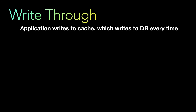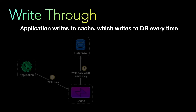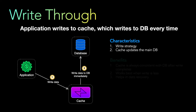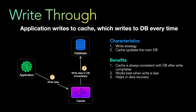The next pattern is the write-through caching strategy. The application writes directly to the cache, which writes to the database every time — it's a pass-through mechanism. Characteristics: it is a write strategy and the cache updates the main database on every write. Benefits: the cache is always consistent with the database after the write completes, and it works best when writes are infrequent. It also helps with data recovery since data is always persisted to the backend database.